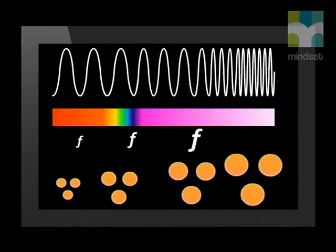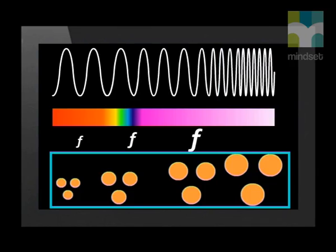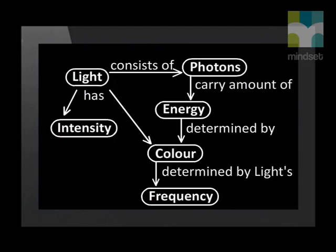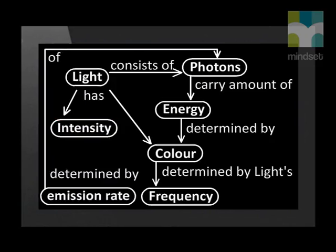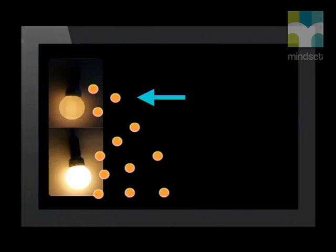To help us understand the concepts, here we represent each photon as an orange ball, where its size represents its amount of energy. However, we must remember that photons actually have no size or mass at all. Einstein said the intensity of light is determined by the rate at which the light source emits photons. A dim light emits few photons every second. A bright light emits many photons every second.